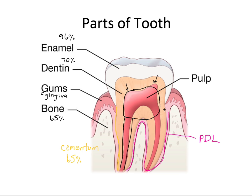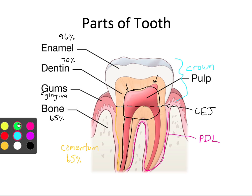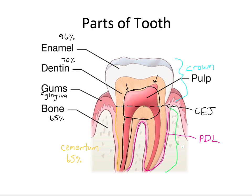One other important structure is the junction between the cementum and the enamel, conveniently called the cemento-enamel junction, or CEJ for short. The CEJ is a very important, anatomically reliable landmark. Anything above the CEJ is referred to as the anatomic crown of the tooth, whereas anything below the CEJ is referred to as the anatomic root.